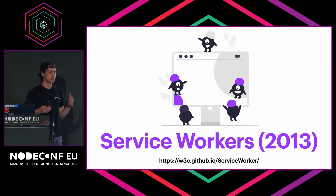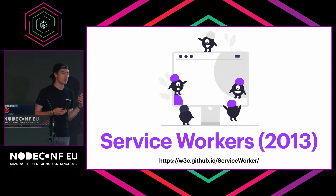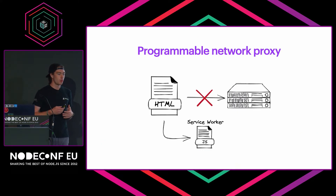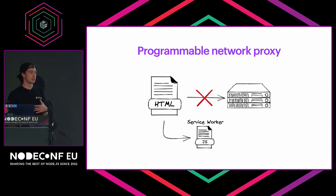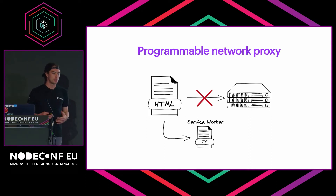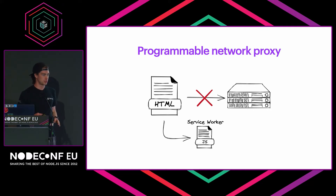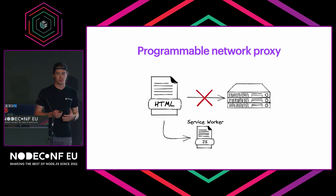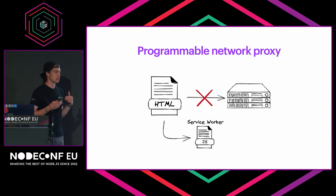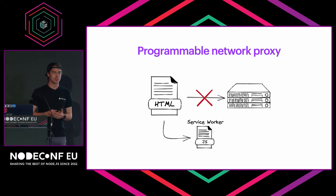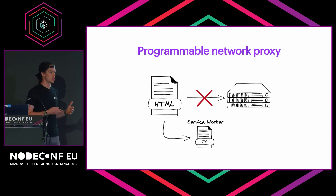In 2013, a new specification came out from W3C called Service Workers. This specification was sort of a programmable network proxy. Programmable network proxies essentially say, hey, my website can't reach the server right now, but I still want it to be functional — I still want it to serve some data or do something. And that's where service workers came in.